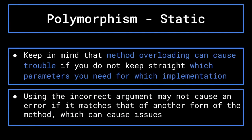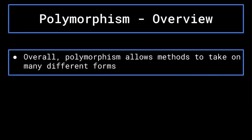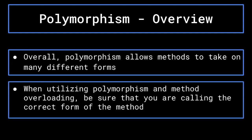When implementing method overloading, the different methods tend to have separate but similar effects. Keep in mind that method overloading can cause trouble if you do not keep straight which of the method implementations you would like to execute and what form of the argument is required to do so. Normally, if you call a method with too many parameters or parameters of the incorrect type, the program will throw an error and you will be able to fix the issue. However, if you mistake the method's argument in such a way that one of the other methods with the same name is called instead, you may not even be aware that you made a mistake. Overall, polymorphism simply allows methods to take on many different forms, and you must be careful to ensure that you are calling the correct form of the method you want.